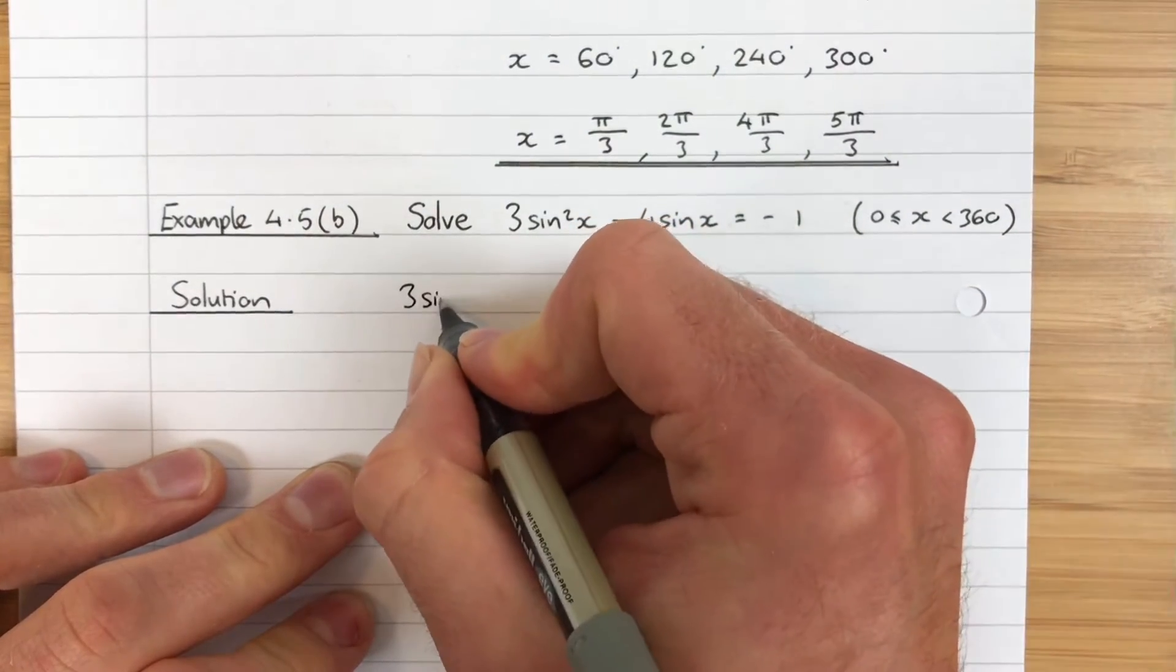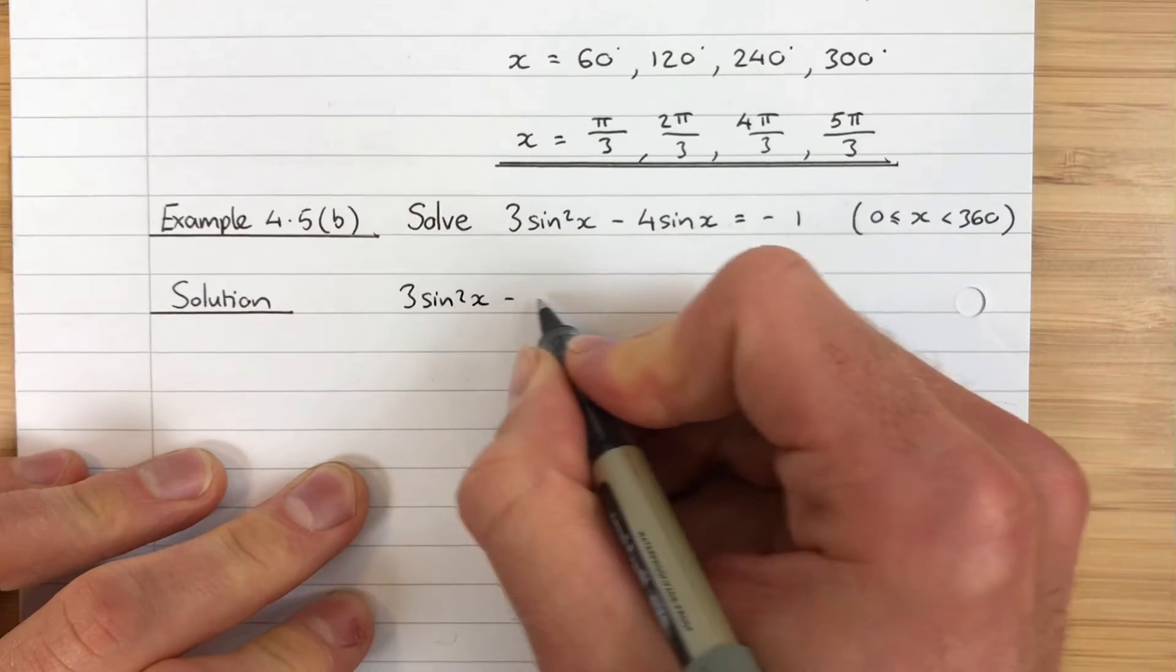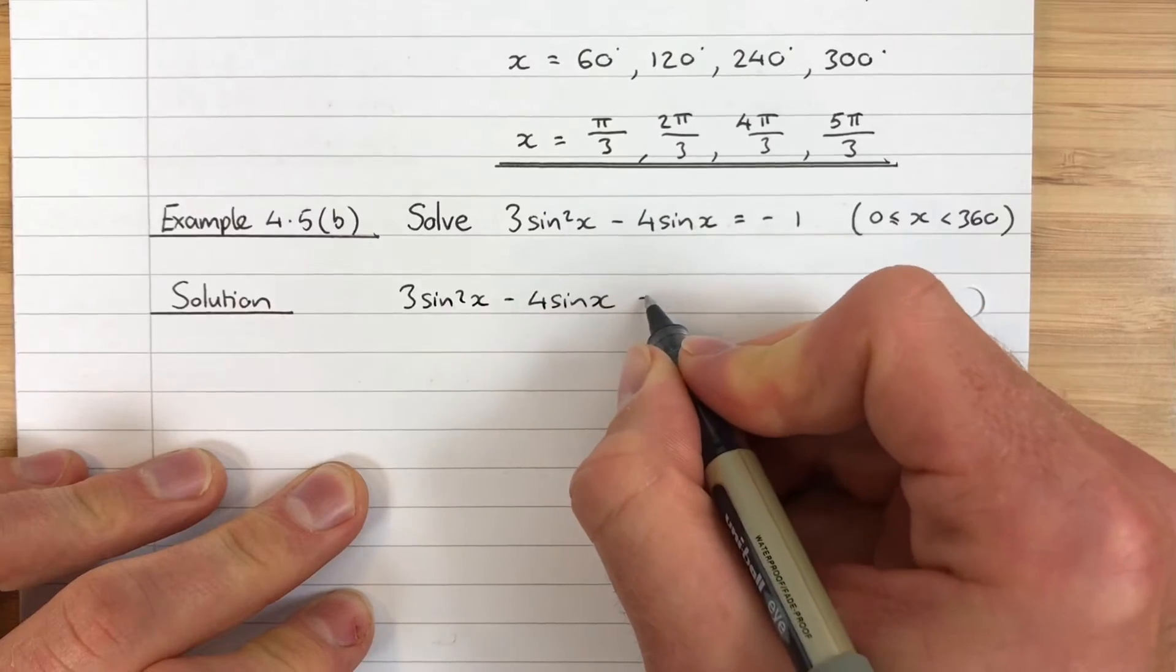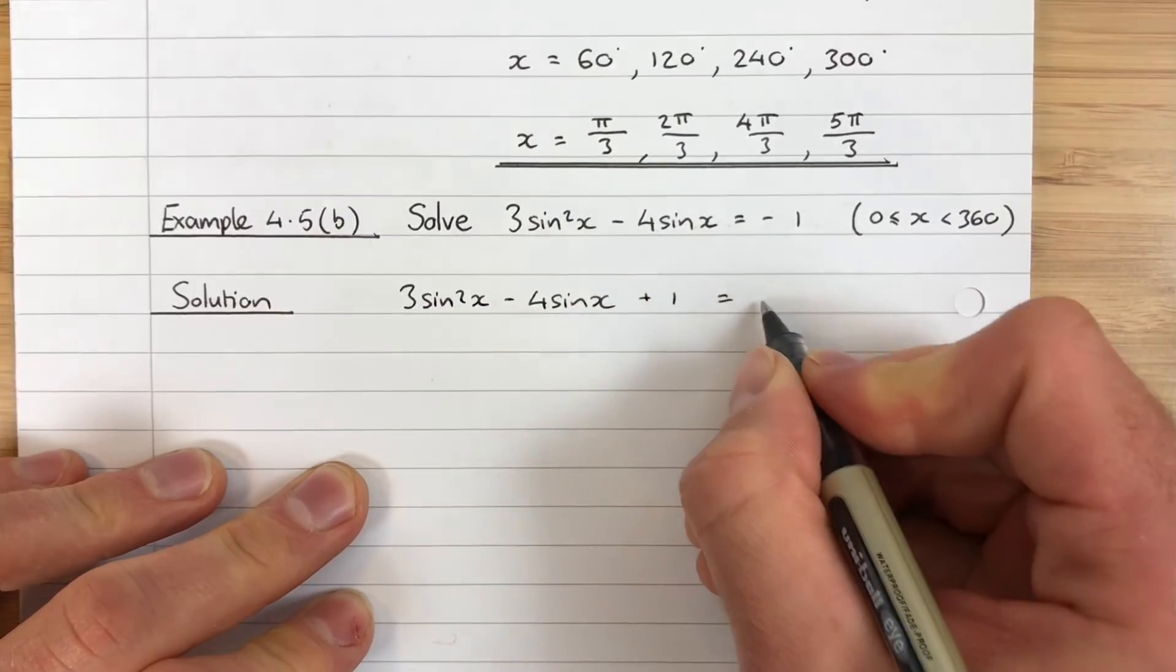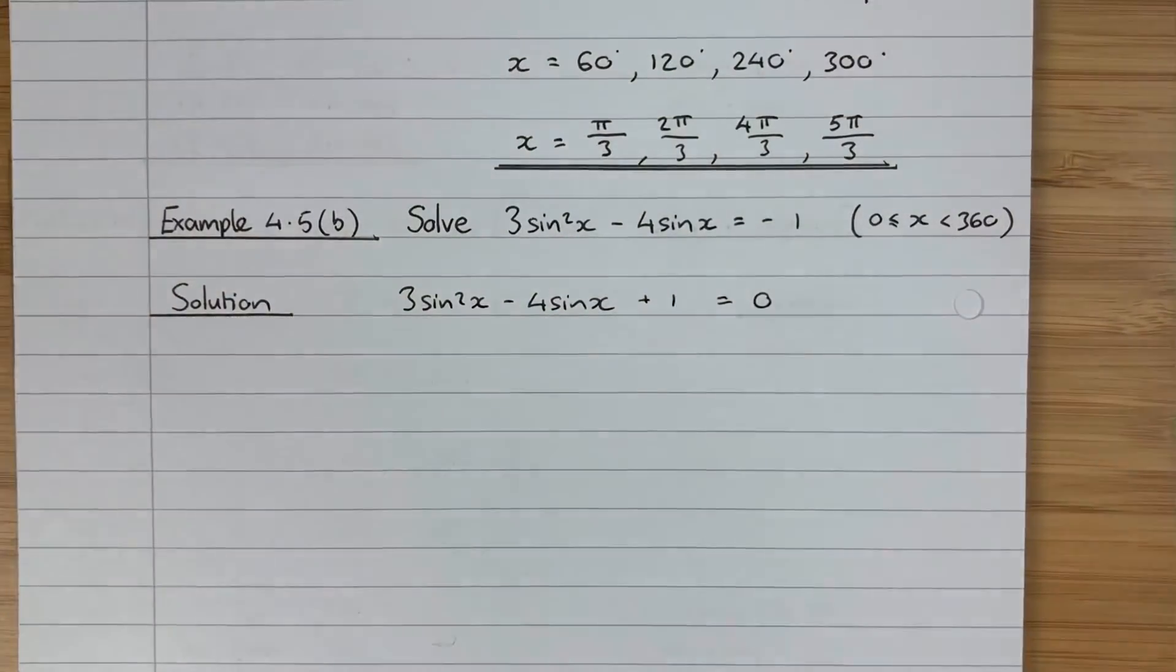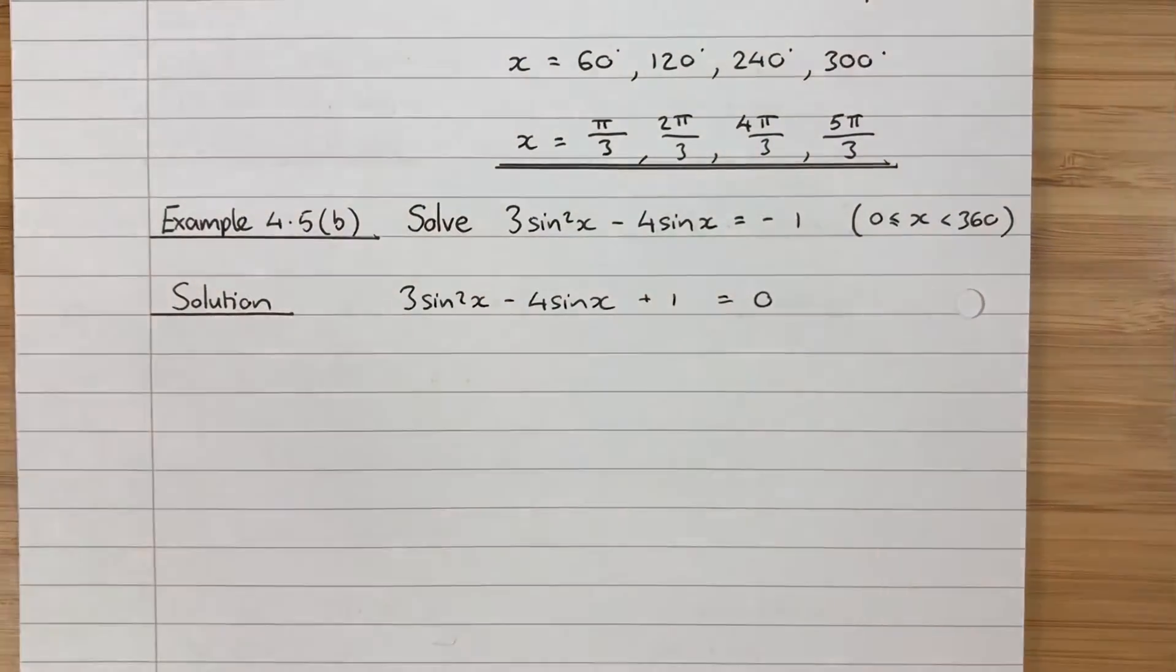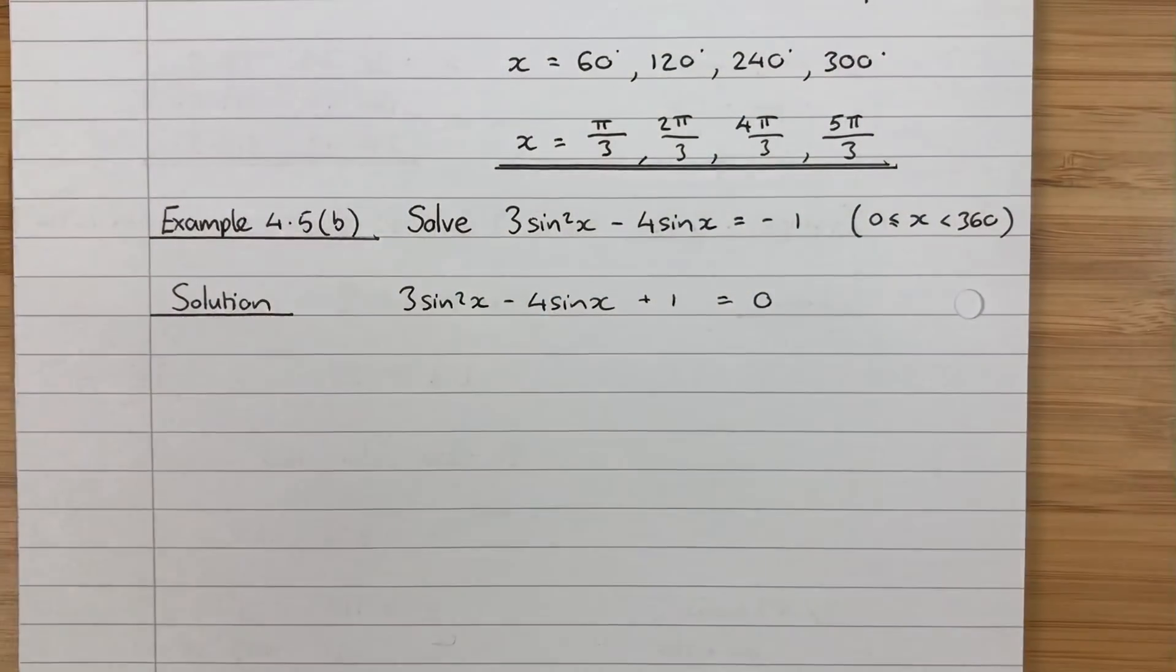And the way to solve a normal quadratic equation is to get it equal to 0. So we are going to write 3sin²x - 4sinx, the minus 1 will come over to this side and become an add 1, and that's going to be equal to 0. So if there are multiple trig terms including one squared term, then we'll bring everything to one side and get it equal to 0 first of all.